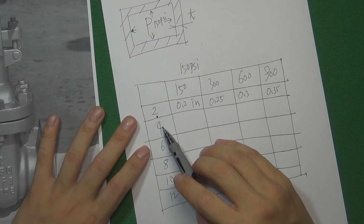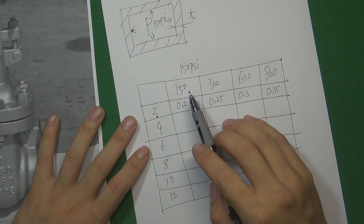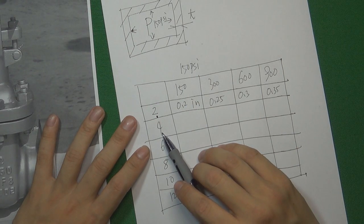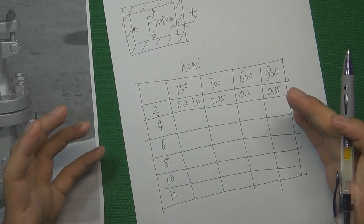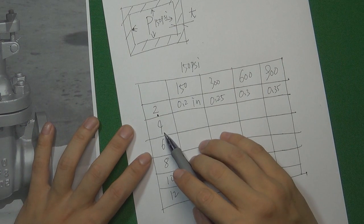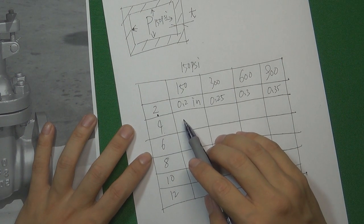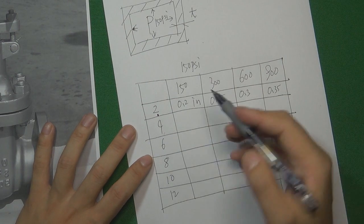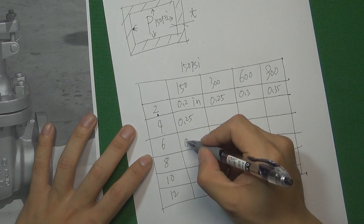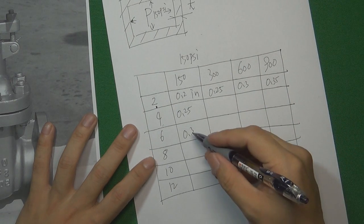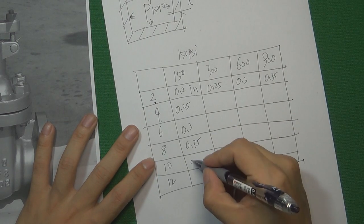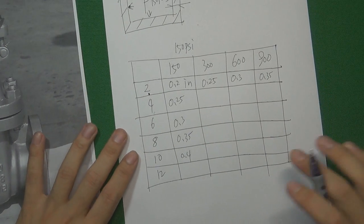Also, when the size is getting bigger, even though the pressure is the same, the bigger size will weaken the body. So with the size getting bigger, we need a thicker wall to hold the same pressure. For example, a 4-inch valve may need 0.25 inch; 6 inch maybe 0.3; 8 inch needs 0.35; 10 inch maybe 0.4. That is just an example.